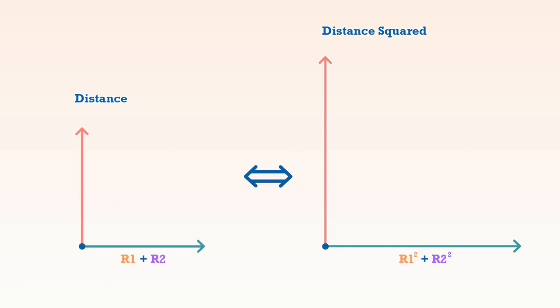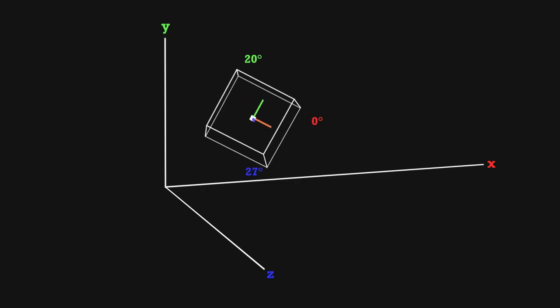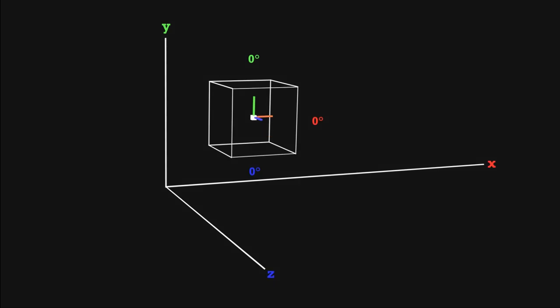An axis-aligned bounding box is a rectangle that has its axis aligned to the axis of the world. It is useful for rectangular objects that are rotationally static, such as a crate.